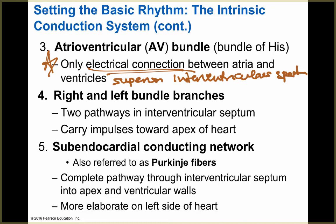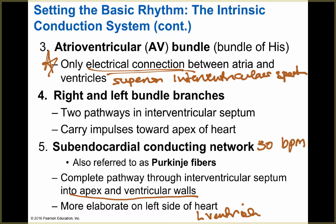From the bundle of His, the impulse goes through the right and left bundle branches in the intraventricular septum, carrying the impulse toward the apex of the heart. The last part is the subendocardial conduction network, also referred to as Purkinje fibers. This is the complete pathway through the intraventricular septum into the apex and ventricle walls — more elaborate on the left side — and it operates at about 30 beats per minute, able to act as a pacemaker under certain conditions.